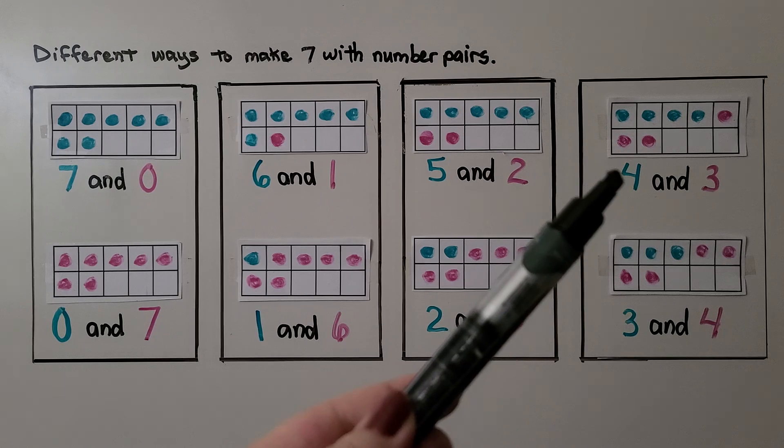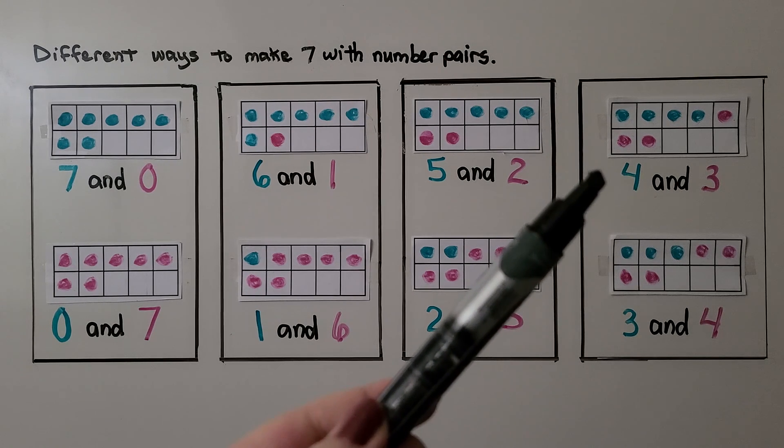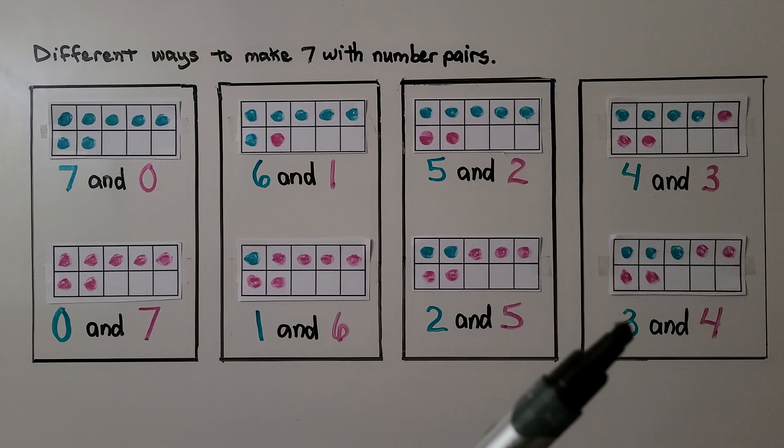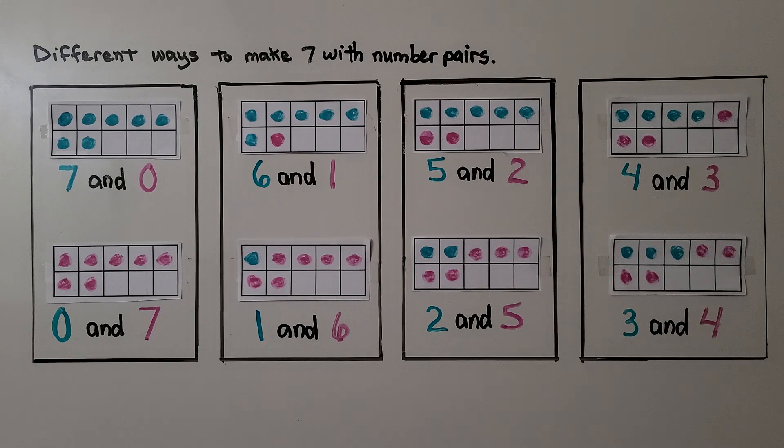We could do 4 blue and 3 pink. Or 3 blue and 4 pink. 4 and 3 or 3 and 4. That makes 7.